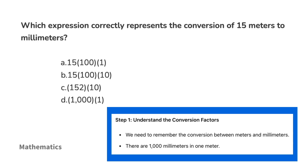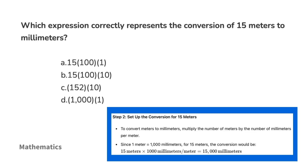There are 1,000 millimeters in one meter. To convert meters to millimeters, multiply the number of meters by the number of millimeters per meter. Since one meter equals 1,000 millimeters, for 15 meters the conversion gives us 15,000 millimeters. Knowing this, the answer — 15 times 100 times 10 — would be letter B.